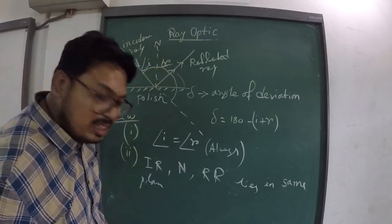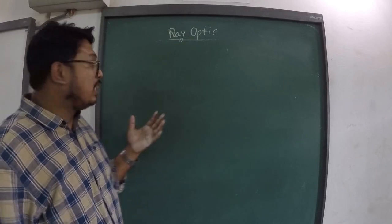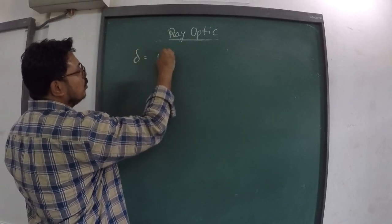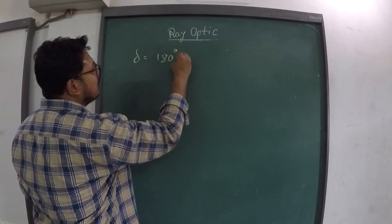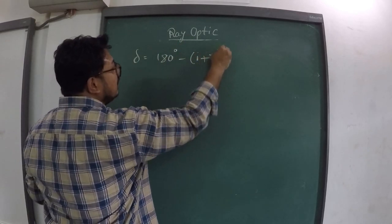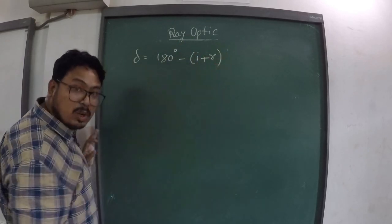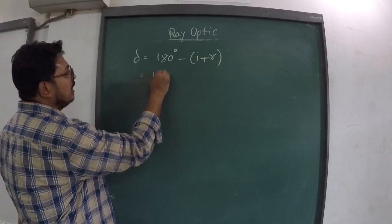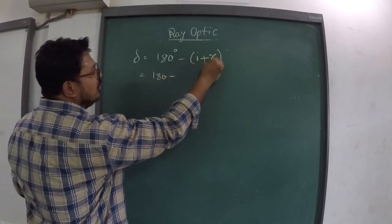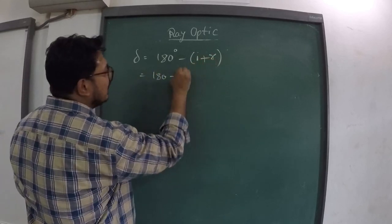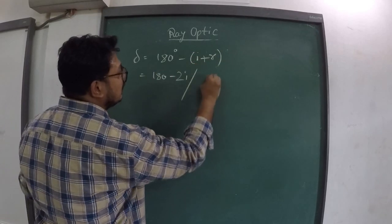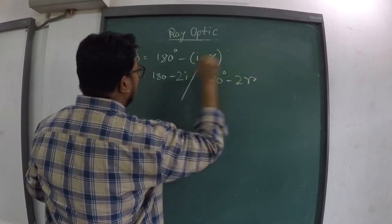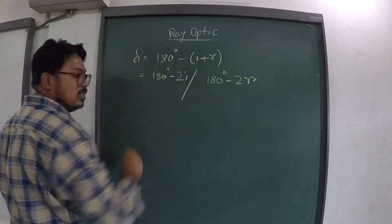The angle between them: we know that it is 180 degrees minus (I plus R). From the first law, we know I equals R. So you can write 180 minus 2I, or equivalently 180 degrees minus 2R.